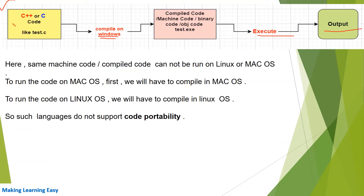This same compiled machine code cannot be run on the Linux or Mac operating system. If we try to run this machine code on a different operating system like Linux or Mac, it will not run or function. This is what is called a platform dependent programming language — C and C++ are platform dependent programming languages.